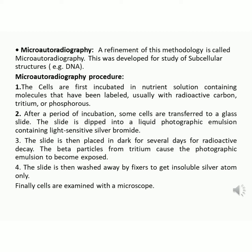After a period of incubation, some cells are transferred to a glass slide. The slide is dipped into a liquid photographic emulsion containing light-sensitive silver bromide. The slide is then placed in dark for several days for radioactive decay; the beta particles from tritium cause the photographic emulsion to become exposed. The slide is then washed away by fixers to get insoluble silver atoms only. Finally, cells are examined with a microscope.